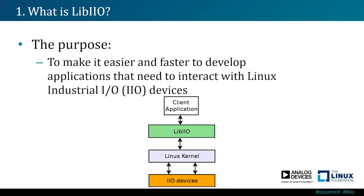LibIIO has been created with one purpose in mind: to make things easier and faster when it comes to developing applications that need to interact with the Linux Industrial Input Output devices. On an embedded system running Linux, there will be a Linux kernel that can interact with hardware through IIO drivers and will expose an API for those devices in user space. This is where LibIIO comes in — it will interact with the exposed API and provide a more easy and flexible way to interact with the IIO devices for any client application.